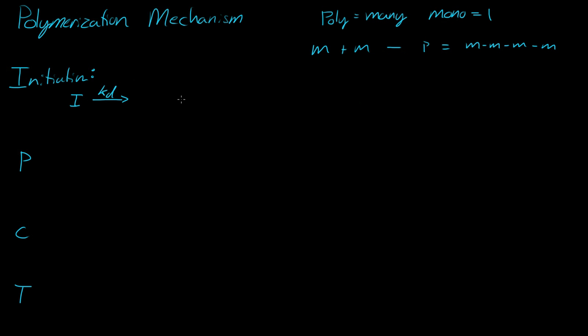So now we'll have two radicals, and this little dot means it's a radical. Now this radical, or one of the radicals, can react with a monomer, and what we get is now a monomer that is now a radical, so we get KI, and I think KI is the initiation constant.